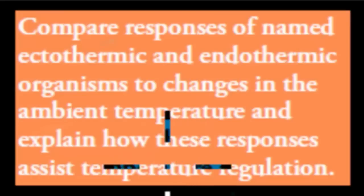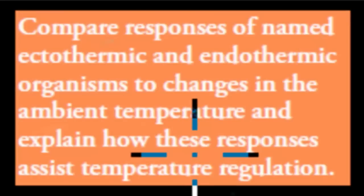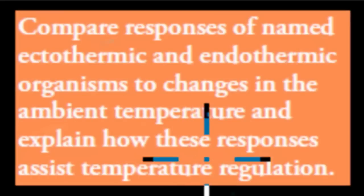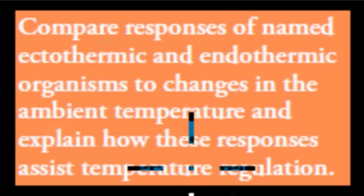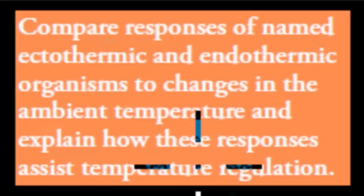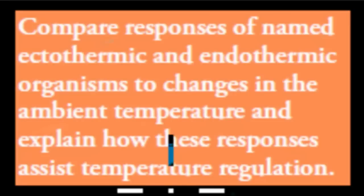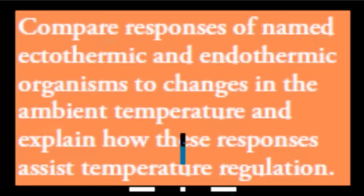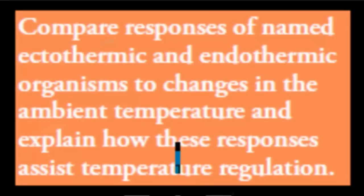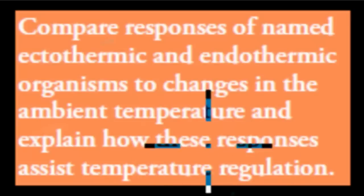Welcome back. In the last video we talked about how individual species can only survive certain temperatures and pHs, and that their actual balance has to be quite finely balanced because they can't survive pHs or temperatures which are too far away from their ideal.